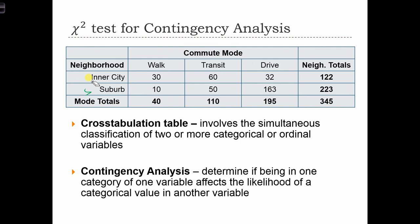In contingency analysis, the goal is to determine if being in one category of one variable affects the likelihood of a categorical value in the other variable. For example, does living in the inner city affect the likelihood that a person will walk, take transit, or drive? So we can use this chi-squared statistic to answer that kind of question when we apply it in a contingency analysis.